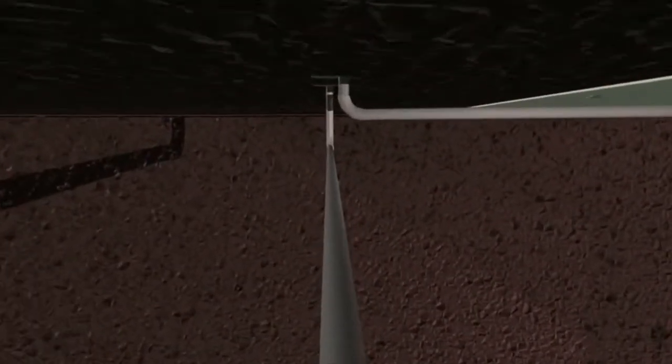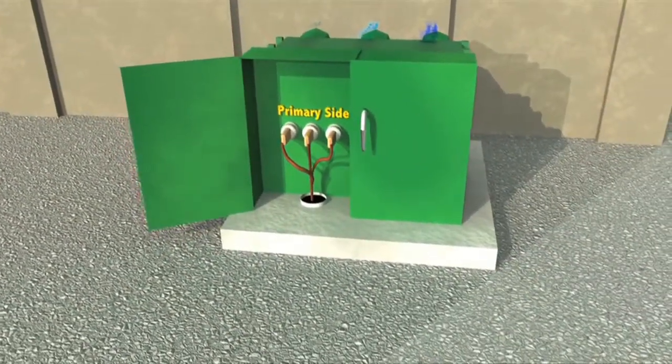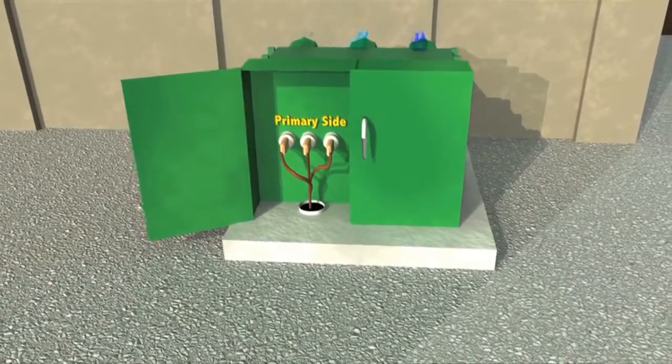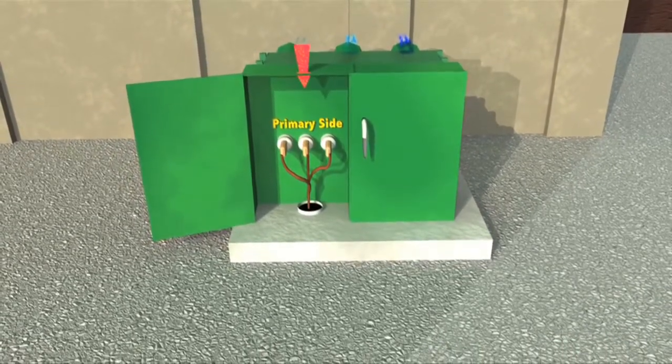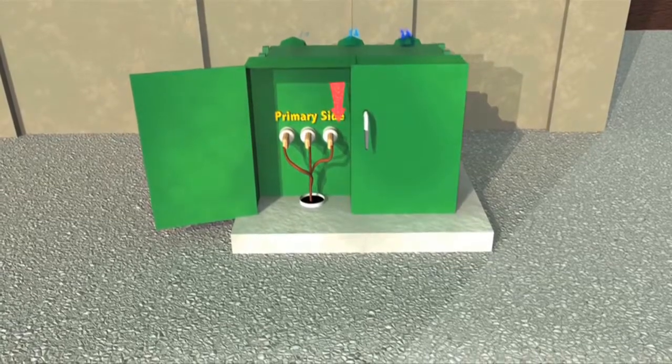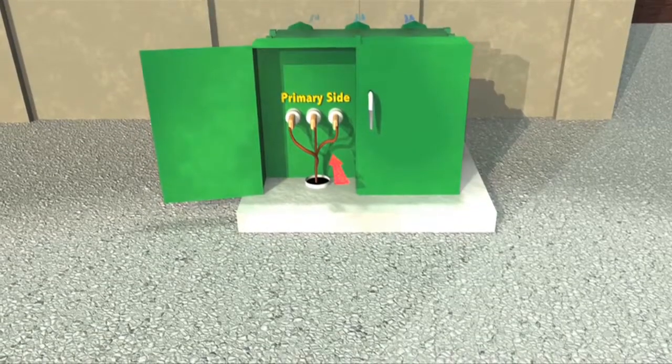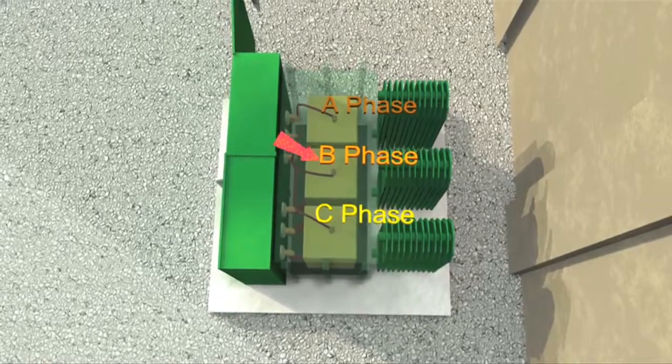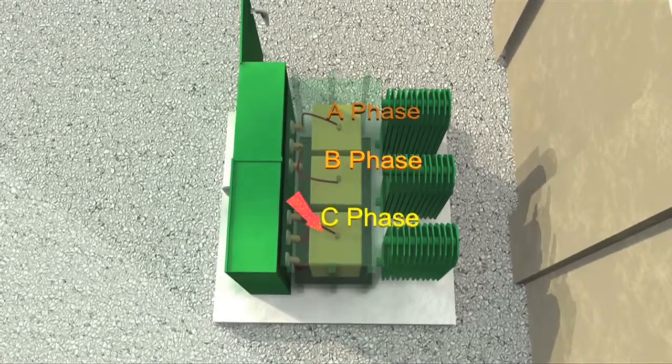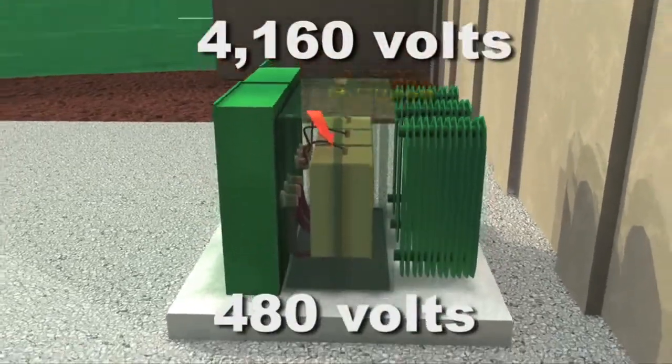This conduit travels underground and enters the oil transformer on the high or primary side of its junction box. Let's look at how the oil transformer works. The junction box receives the incoming power on the high or primary side. It enters the transformer through insulated copper connectors. Notice there are three wires. This is our three-phase system. There are three windings, one for each of the wires or phases. The wires are connected to the top of the windings. The windings in this transformer will step down the voltage to 480 volts.